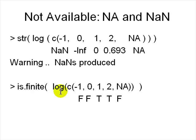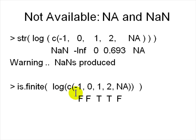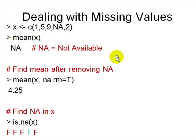You can check whether values are finite using 'is.finite()' — the dot is just part of the function name. You pass it the vector and it tells you: FALSE means it's not finite. log(-1) is not finite, and only certain values in the vector are finite.